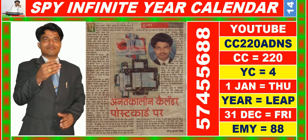In this video you are watching SPY Infinite Year Calendar for the year having calendar code equal to 220. You may also search it on YouTube by the code CC220ADNS.